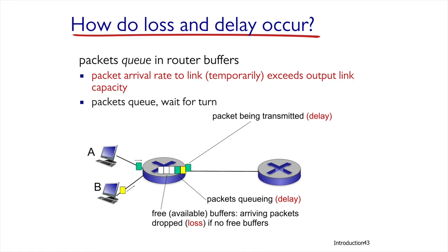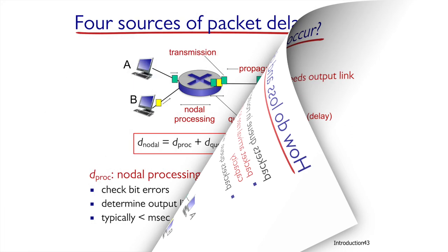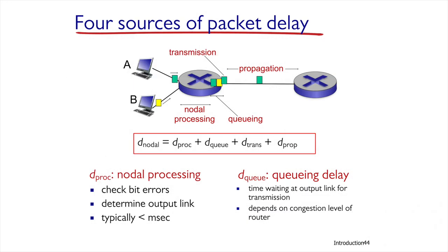There are four parameters delaying packets passing through the router. The first cause is called process delay, which is the time it takes the router to check for an error in the packet and decide which line to move the packet out to. Process delays usually take less than a millisecond, that is, less than a thousandth of a second.